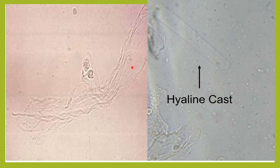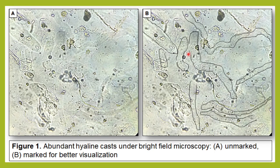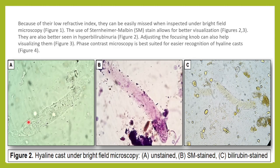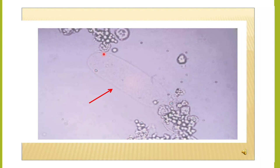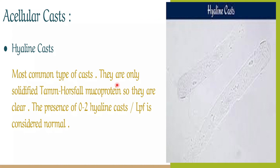A picture shows a mucus thread alongside a hyaline cast. The mucus thread is also transparent but has no proper structure or proper borders, so it can sometimes be confused with a hyaline cast. In bright field microscopy it is very difficult to find these structures. The hyaline cast has proper tapering borders and visible margins. When stained with a special SM stain, and in a patient with hyperbilirubinemia, bilirubin stains the cast, making it easier to identify.